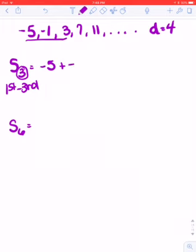So I'm going to take negative 5, negative 1, and 3, and I'm going to add them together. So if I took negative 5, negative 1, and 3 and added it together, I would end up with negative 3. So remember, as far as notation, it's S sub 3 equals negative 3.